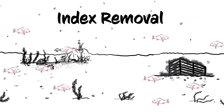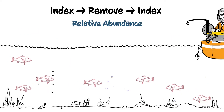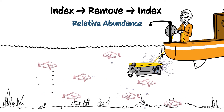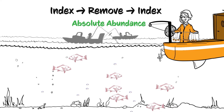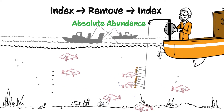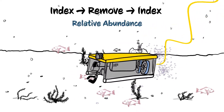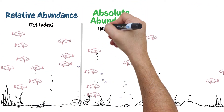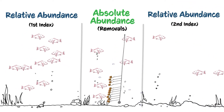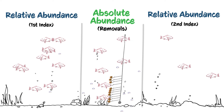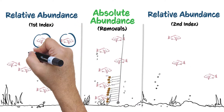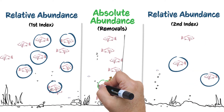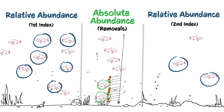One type of depletion study is known as index removal. This involves successive cycles of indexing or counting the population using video footage collected with a remotely operated vehicle, followed by removing individuals from the population using hook and line gear, and then indexing again with the remotely operated vehicle. After at least one index-remove-index cycle is completed, the second index should be a reduction of the first index based on the number of individuals that were removed. Scientists will use this difference between the first and second index values along with the number of absolute removals from hook and line gear to generate a population size estimate.